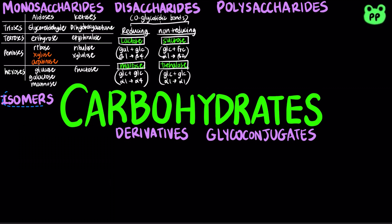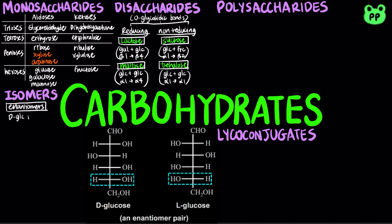Carbohydrates have five main types of isomers. All carbohydrates except for dihydroxyacetone contain one or more asymmetric or chiral carbon atoms. Therefore, they have two different optical isomers, or enantiomers, such as D-glucose and L-glucose. They differ by the orientation of the hydroxyl group on the chiral carbon farthest away from the aldehyde or ketone group.